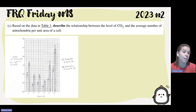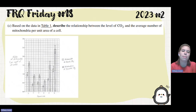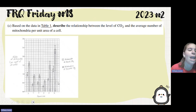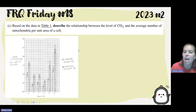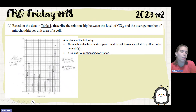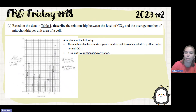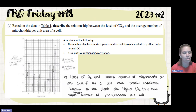Part C asks to describe the relationship between the level of carbon dioxide and the average number of mitochondria per unit area of the cell based on the data. You can see there is an increase from normal to elevated for each species, so you can say the number of mitochondria is greater under elevated carbon dioxide, or that there is a positive correlation. A strong student response states that carbon dioxide levels and the average number of mitochondria per unit area have a positive correlation.